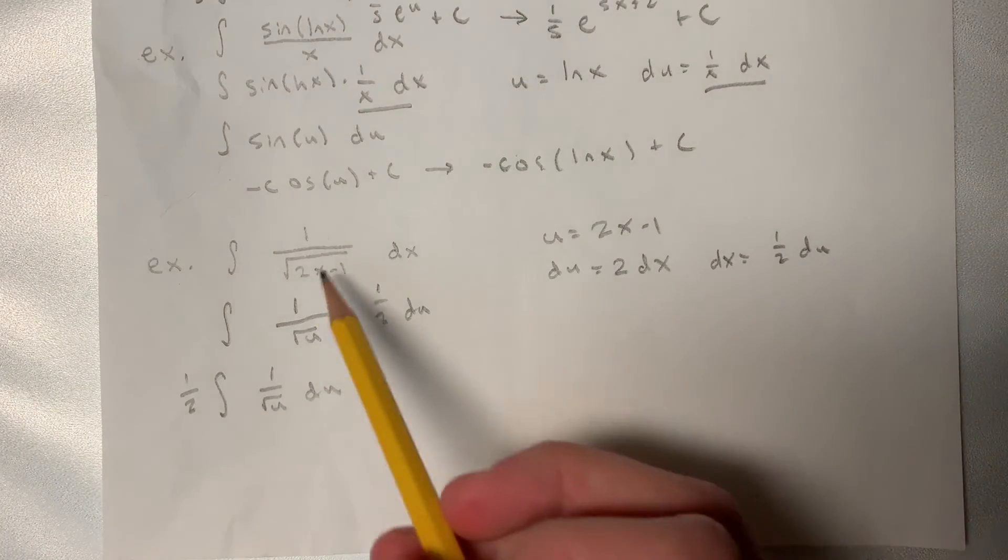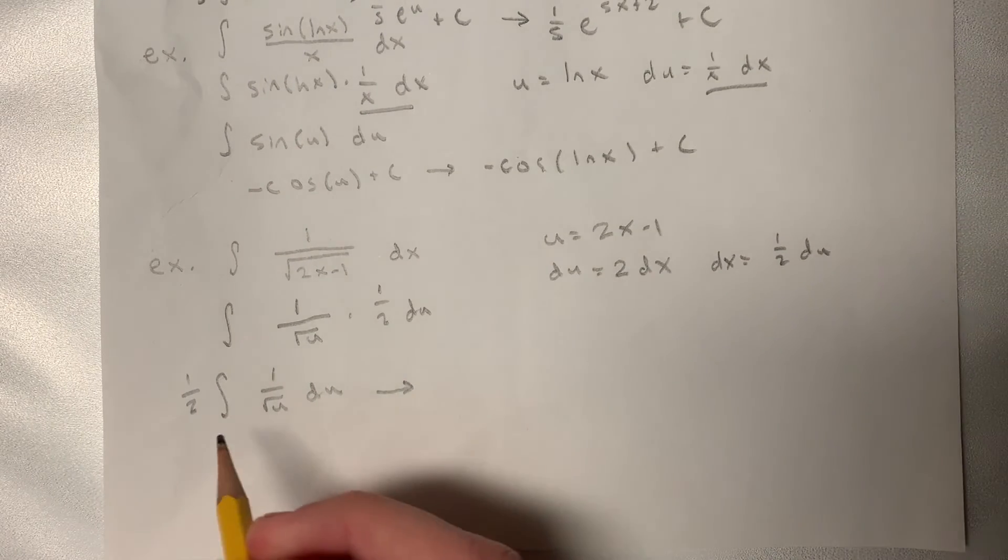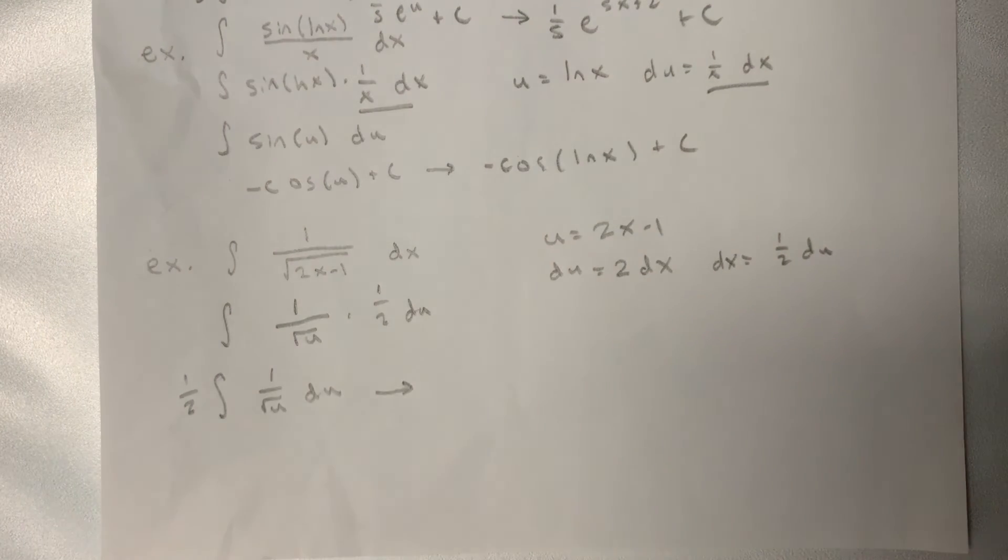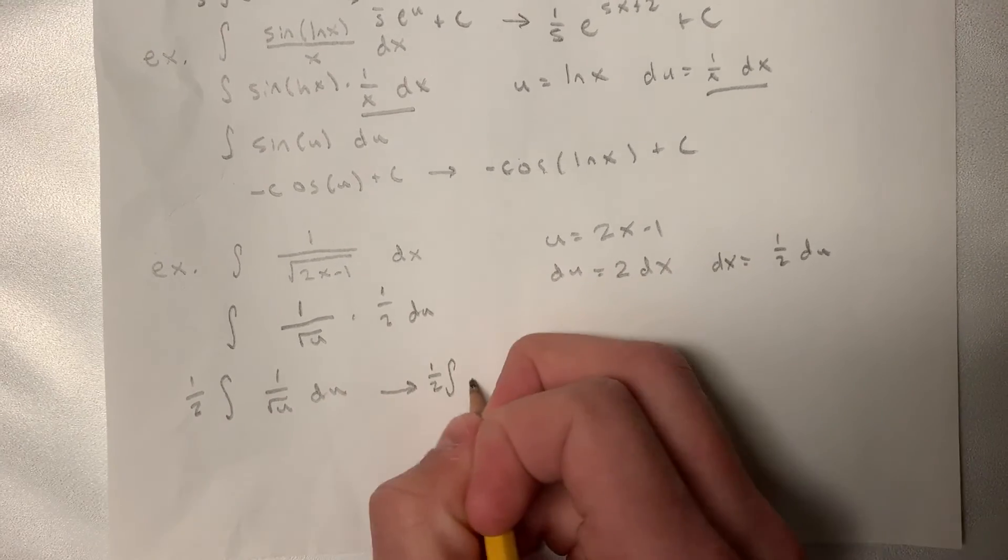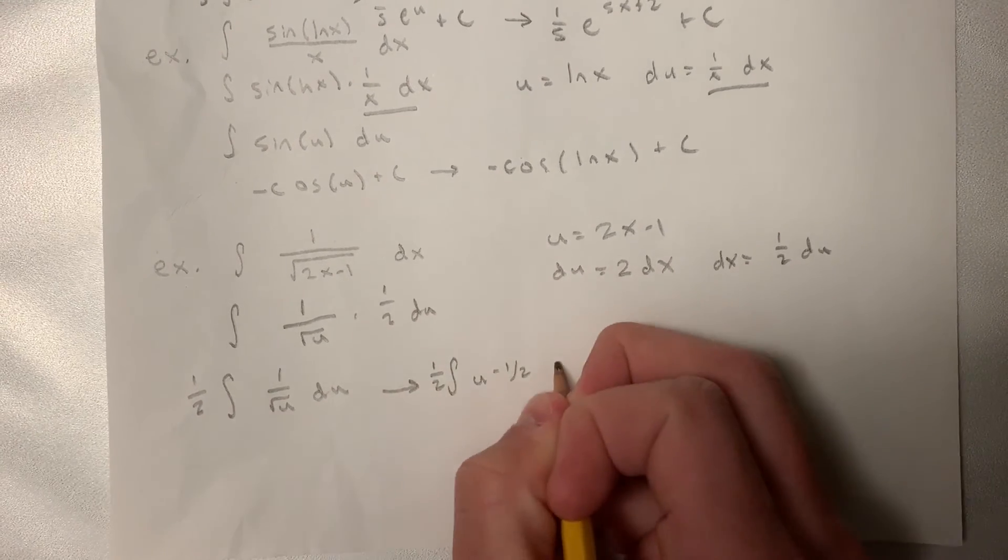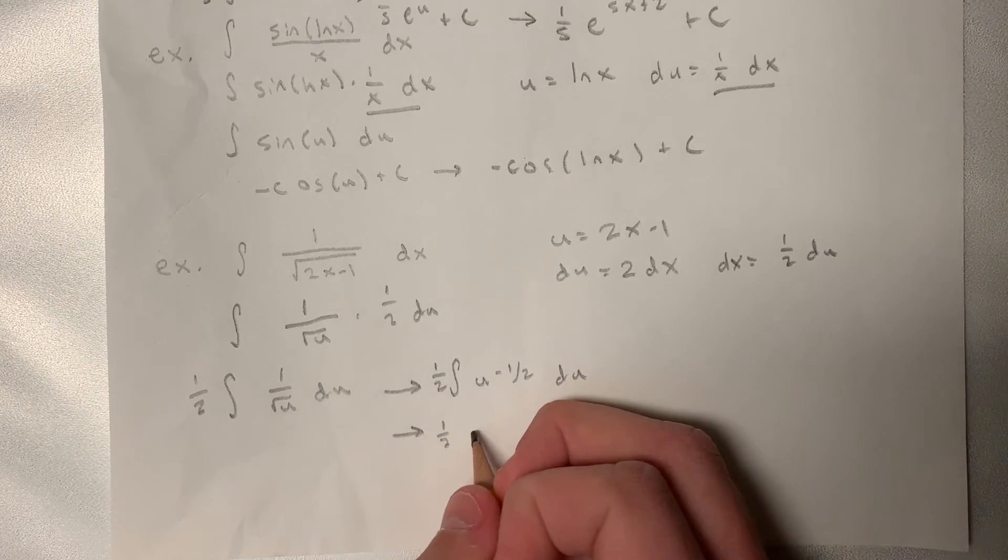Okay, so this is looking a lot better than this original integral. So we know that 1 divided by the square root of u is just u to the negative 1 half. So we can just perform our basic antiderivative to solve this.